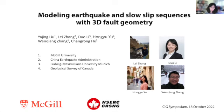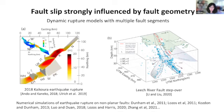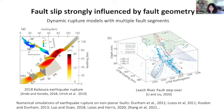We've heard from a couple of previous talks about the strong influence of geometry on the total amount of slip and also the rupture processes for earthquakes. There's a long list of literature — I'm just showing a few examples of recent dynamic rupture models with multiple fault segments, like from the 2018 Kaikoura earthquake with notoriously complex fault ruptures. And close to home is the Leech River fault at the south end of Vancouver Island, that based on seismicity extends offshore with a step over toward Washington state.